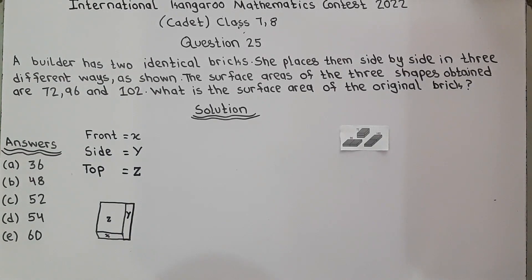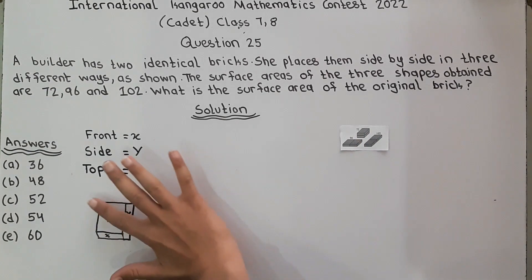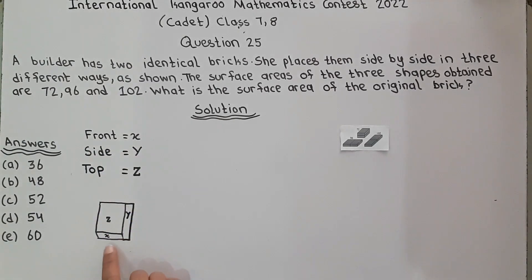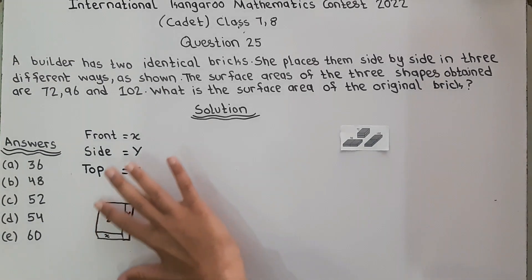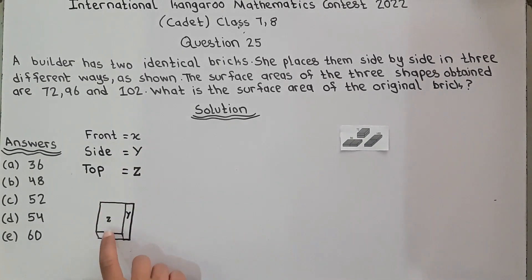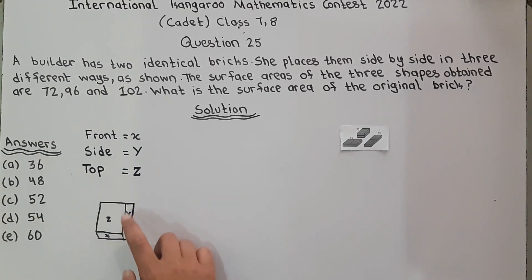If we take a brick, we can label the faces: the front face as X, the side face as Y, and the top face as Z. So we have three different face dimensions — X for front, Y for side, and Z for top.